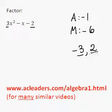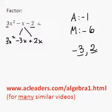So what do we do with these guys? We split up the middle term into negative 3x, because of this guy, and positive 2x. Then we bring down the other elements that were just chilling out there.